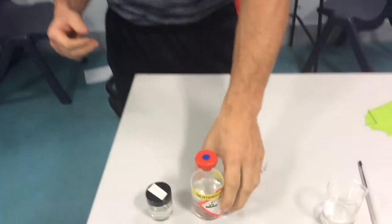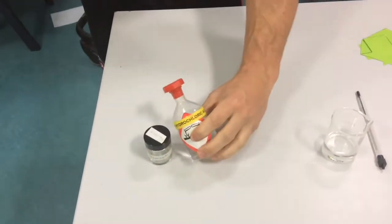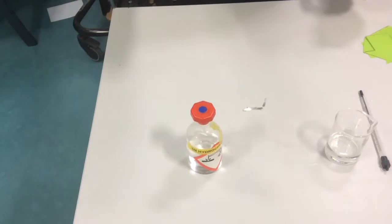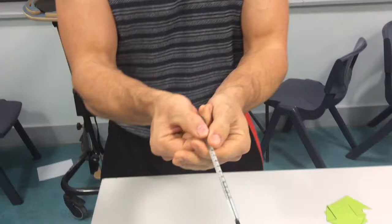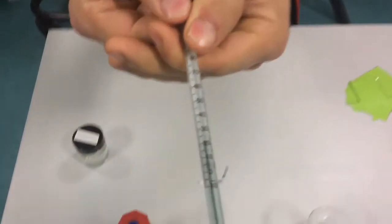So if you come over here, I've got a little bit of hydrochloric acid and a bit of magnesium. Now if you look on my thermometer, this is room temperature, around 23 degrees.